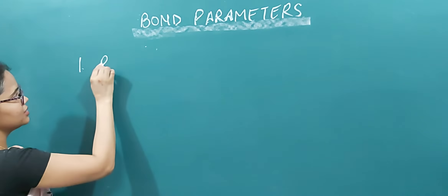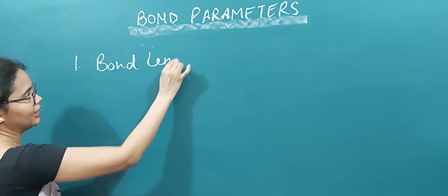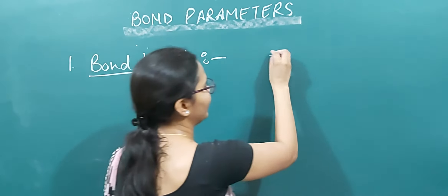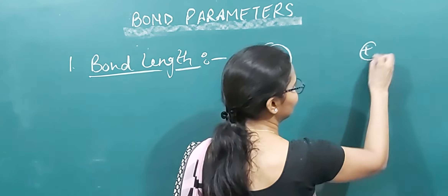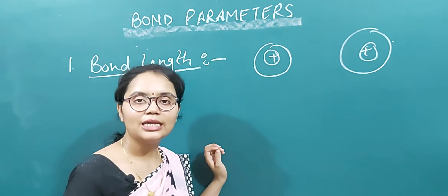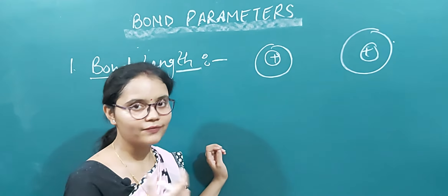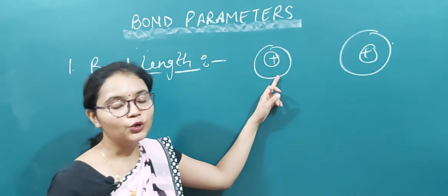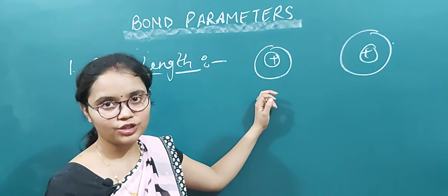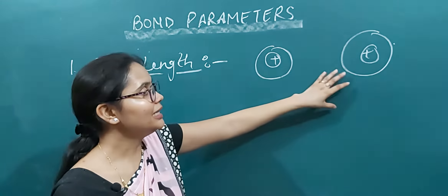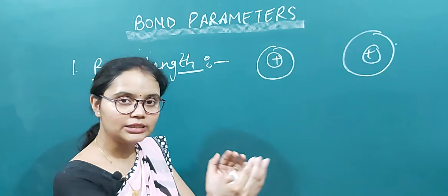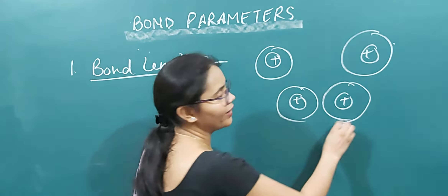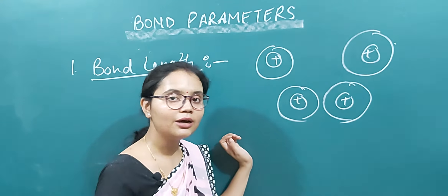To understand bond length, assume two atoms which are far apart from each other. The distance between these two atoms is very large, so because of this large distance there will be no interaction — neither attraction nor repulsion.